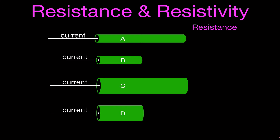You can think about which one would be hardest for you to get through — which one would take the longest amount of time. You should notice that A has the lower diameter and the greater length, so that one will be the hardest to get through, and that is because it offers the greatest resistance. That means it would have the lowest current. Wire D has the greater diameter and the shorter length, so it has the lowest resistance and would be the easiest to get through, therefore having the highest current.